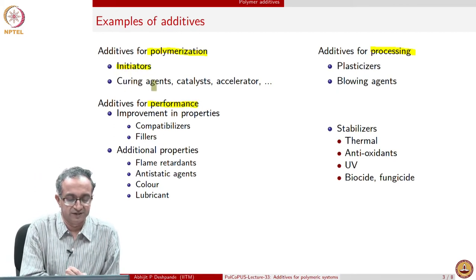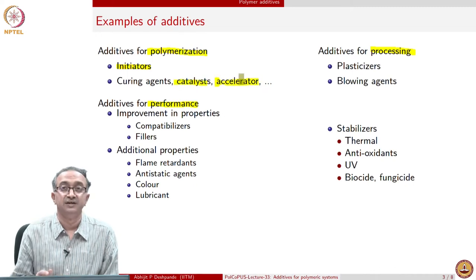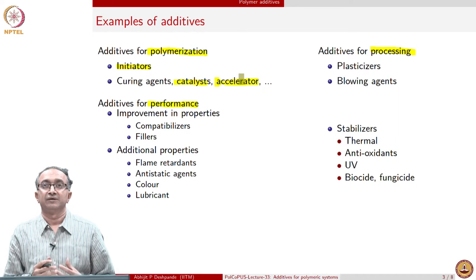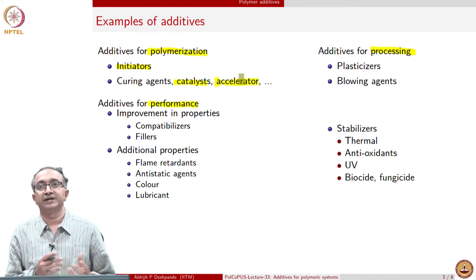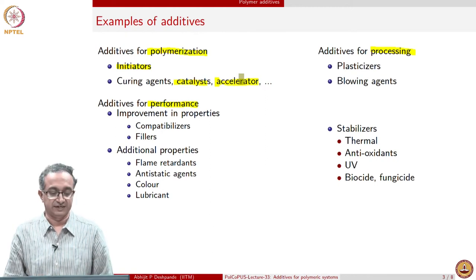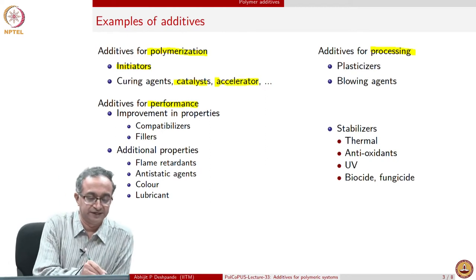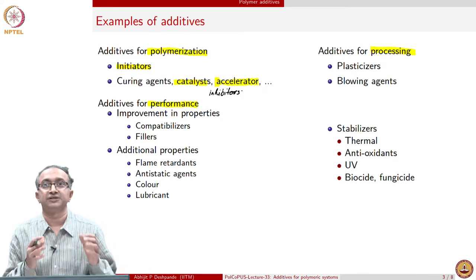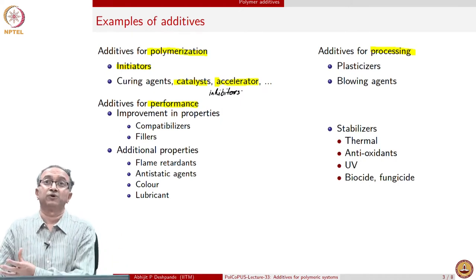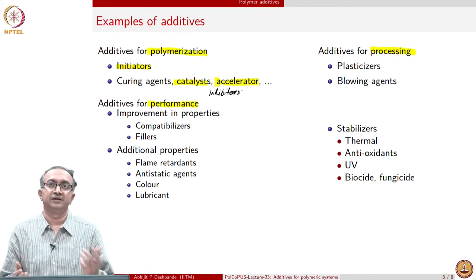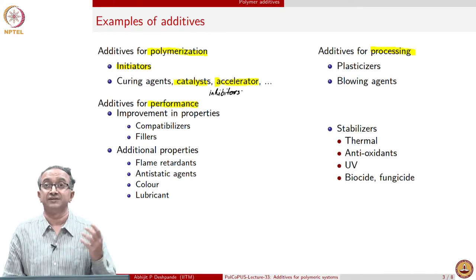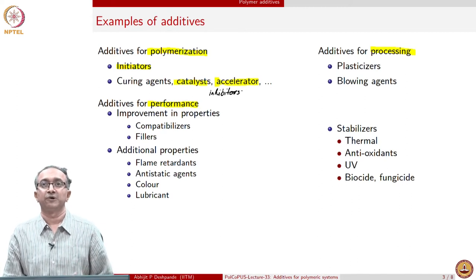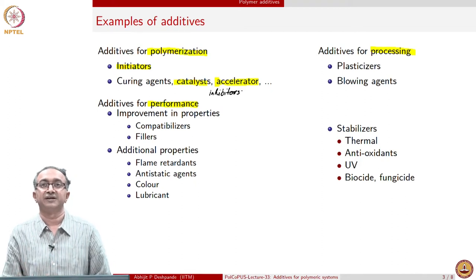In the case of polymerization, we have initiators, catalysts, and accelerators — materials which take part in reactions or enhance or control the rate of reactions. For example, you could also add inhibitors if you want the chemical reaction to be suppressed for a certain amount of time before it proceeds further. An inhibitor could also be thought of in the same way an accelerator is a common ingredient in most polymeric material formulations, because in a practical polymerization scenario we would want the rate to be as high as possible.